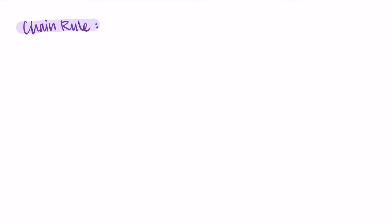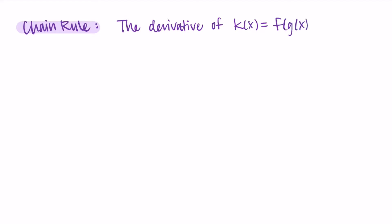Hey, welcome back. In this video we're going to talk about the chain rule, which is just another derivative rule we can use to help us find derivatives. Specifically, we use the chain rule when we have a composition of functions. It's called chain rule because you can think of a chain of functions — we use it when finding the derivative of a composition.